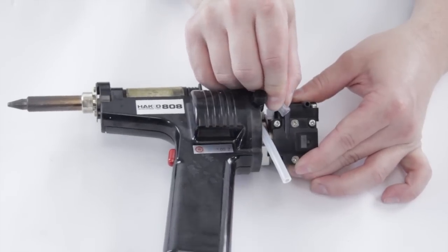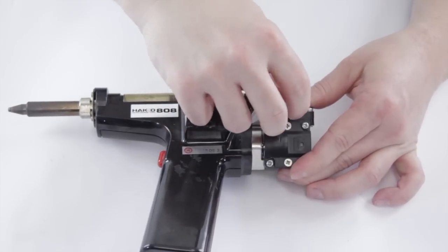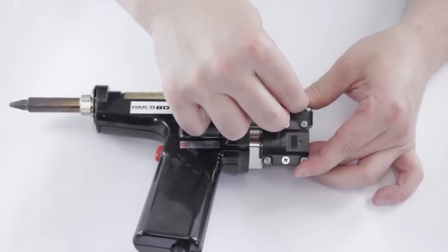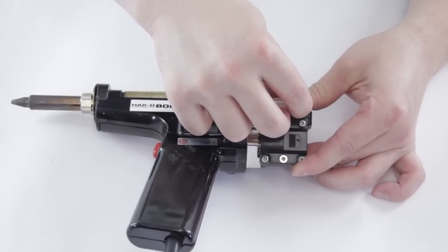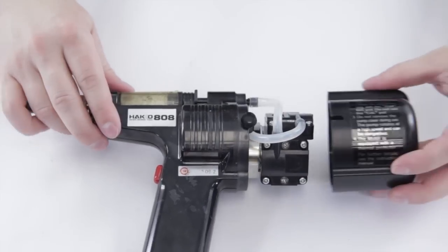You just slide back over, they can be a little tricky sometimes, but work them over. We have the nozzles reattached and now we can put the housing back on.